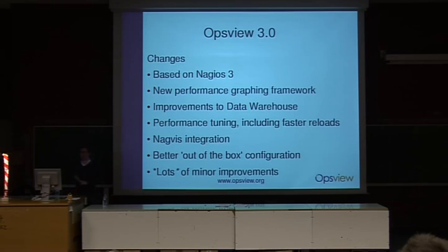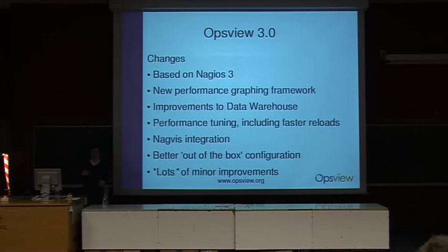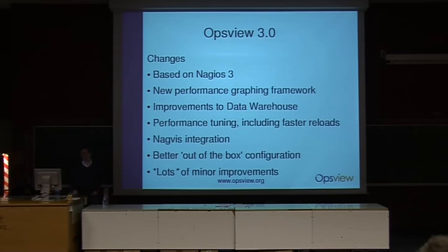So what's in OpsView version 3? The main change is it's based on Nagios 3. We've got a new performance graphing framework that makes it easier to get performance graphing information out using RRDs in a better storage format. We've improved the data warehouse, made improvements to performance including faster reloads — especially on very large systems, with the reload cycle being 10% quicker. We've also integrated NagVis, a popular tool in the Nagios ecosystem for visualizing status information, and included a better out-of-the-box configuration with lots of minor improvements.